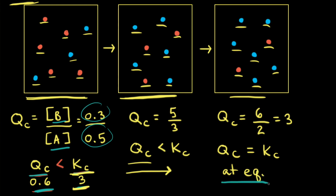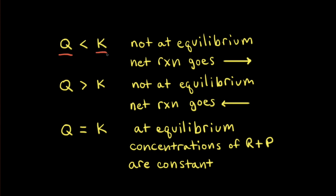At equilibrium, the reactants turn into products at the same rate that products turn back into reactants. Therefore, the concentrations of both reactants and products remain constant at equilibrium. The net reaction continues until Q equals K, at which point concentrations stop changing.